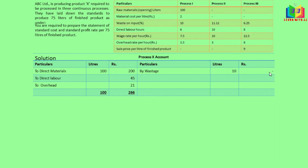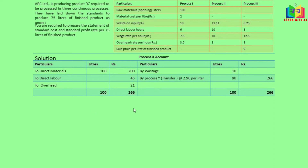Balancing Process X, we get 90 liters and the total cost is 266. The cost per liter is 266 divided by 90, which gives 2.96 per liter. This output is then transferred to Process Y.